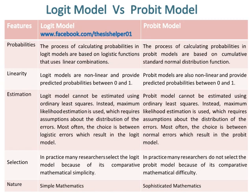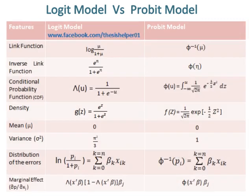The nature of Logit Models is based on simple mathematics, whereas the nature of Probit Models is based on sophisticated mathematics. Comparison details including the link function, inverse link function, conditional probability function, density, mean, and variance are provided.